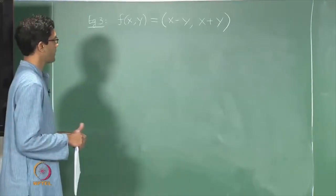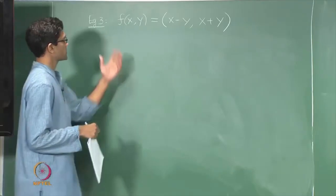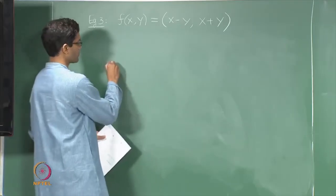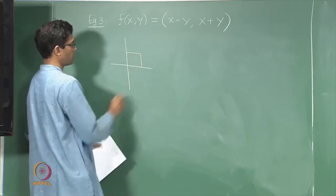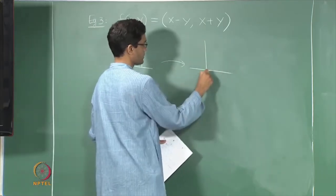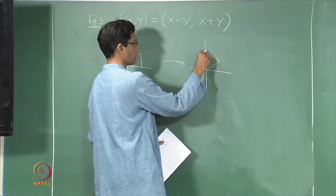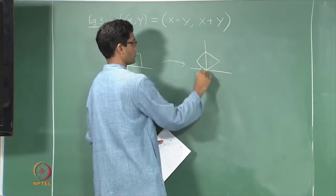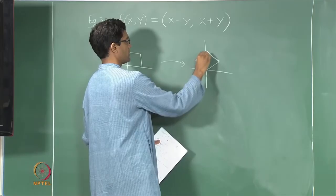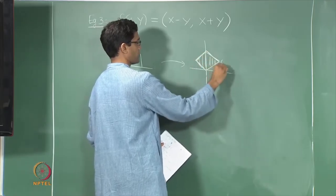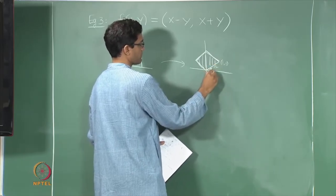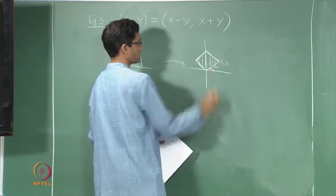Last time we talked about the following map from R² to R² which is given by f(x,y) = (x−y, x+y). We noticed that it does the following to a square of side 1: it maps it to again a square, but of a larger side length √2, and also rotated by an angle of 45 degrees. This point is (1,1), so this is in fact a square of side √2 which makes an angle of 45 degrees — that is π/4 — with the x-axis.